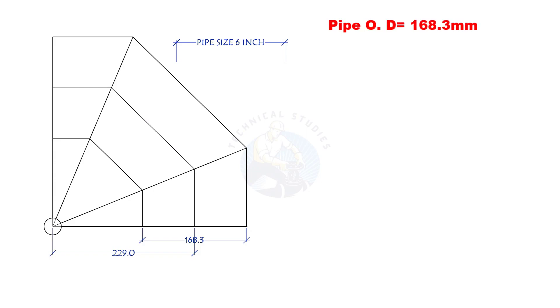This is a 6-inch pipe. The OD of the pipe is 168.3 mm. The center radius of the mitre is 229 mm, but this formula is applicable for any radius.